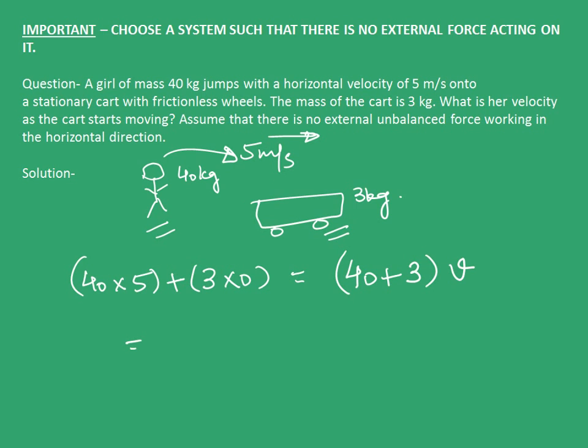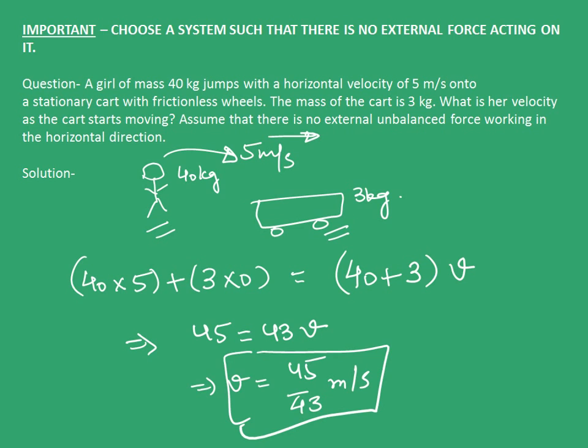Equating this, we get 45 equals 43V, which implies V equals 45 upon 43 m/s. This means when the girl jumps on the cart, its final velocity will be 45 upon 43 m/s.